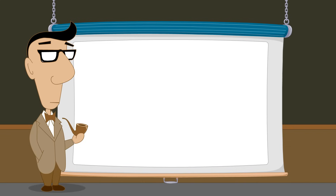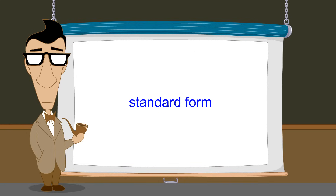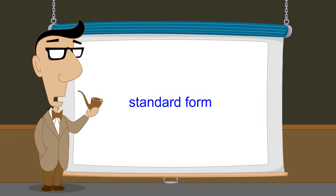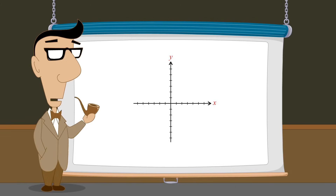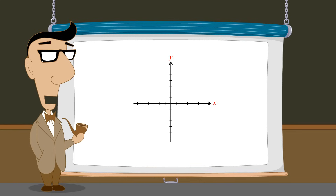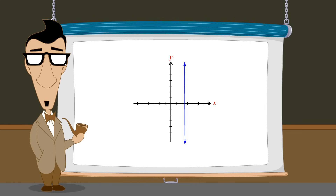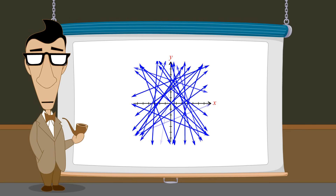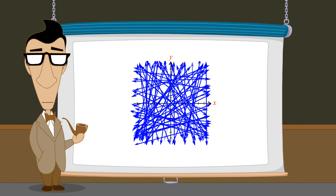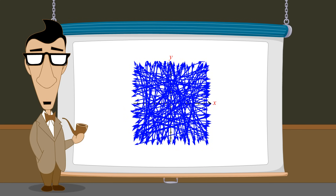In this lecture, we will introduce one additional and important form of linear equation called the standard form. The standard form has several advantages over the other linear forms we have studied. One advantage is that, unlike the other forms, the standard form can describe vertical lines. Therefore, any line in the xy-plane can be described by a linear equation written in standard form.